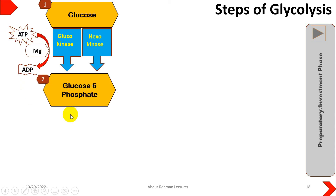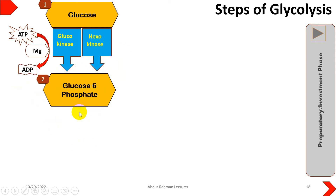Glucose 6-phosphate is an intermediate molecule that can either go to the gluconeogenesis process, glycogenesis process, pentose phosphate pathway, or even glycolysis. That will depend on the demands or situation of the body.